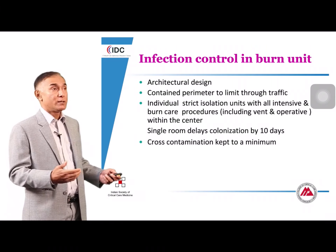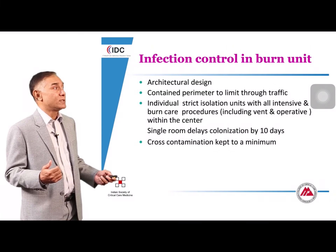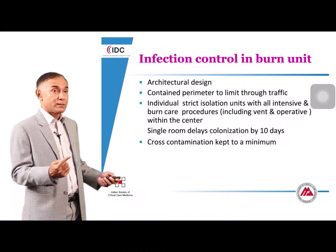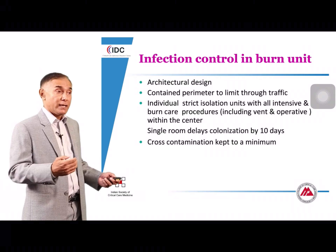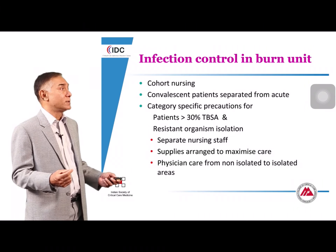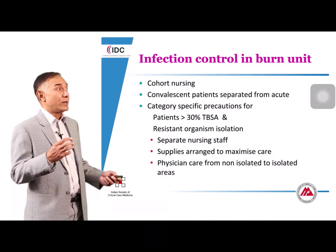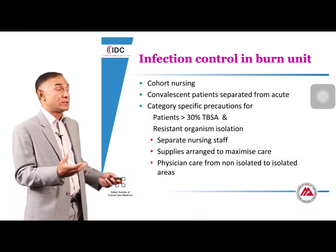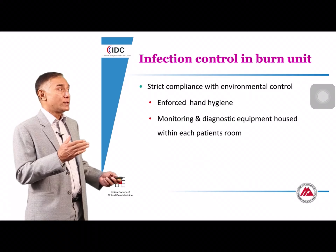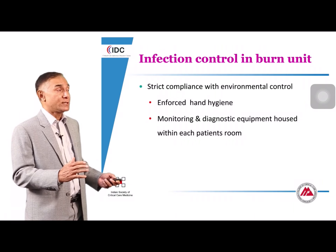Infection control in the burn unit is of paramount importance. The unit should be architecturally designed for burn patients with a contained perimeter to limit through traffic. Individual strict isolation units are required for patients with multi-drug resistant organisms; one study showed that a single room versus a shared ward delayed colonization by up to 10 days. Cohort nursing is needed; recovering patients should be separated from acutely ill patients who often harbor MDR bacteria. Category-specific precautions and strict environmental standards — including air quality and door controls — must be maintained.